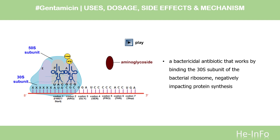Mechanism of Action. Gentamicin is a bactericidal antibiotic that works by binding the 30S subunit of the bacterial ribosome, negatively impacting protein synthesis. The primary mechanism of action is generally accepted to work through ablating the ability of the ribosome to discriminate on proper transfer RNA and messenger RNA interactions.